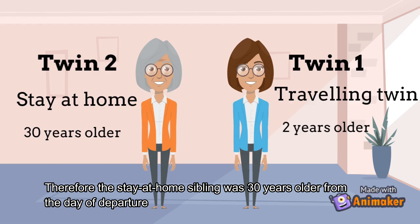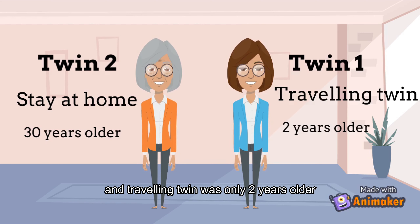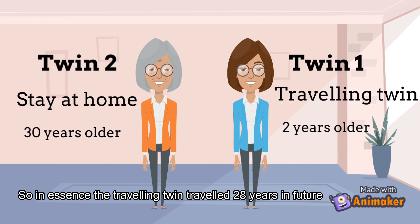Therefore, the stay-at-home sibling was 30 years older from the day of departure, and the travelling twin was only two years older. So, in essence, the travelling twin travelled 28 years into the future.